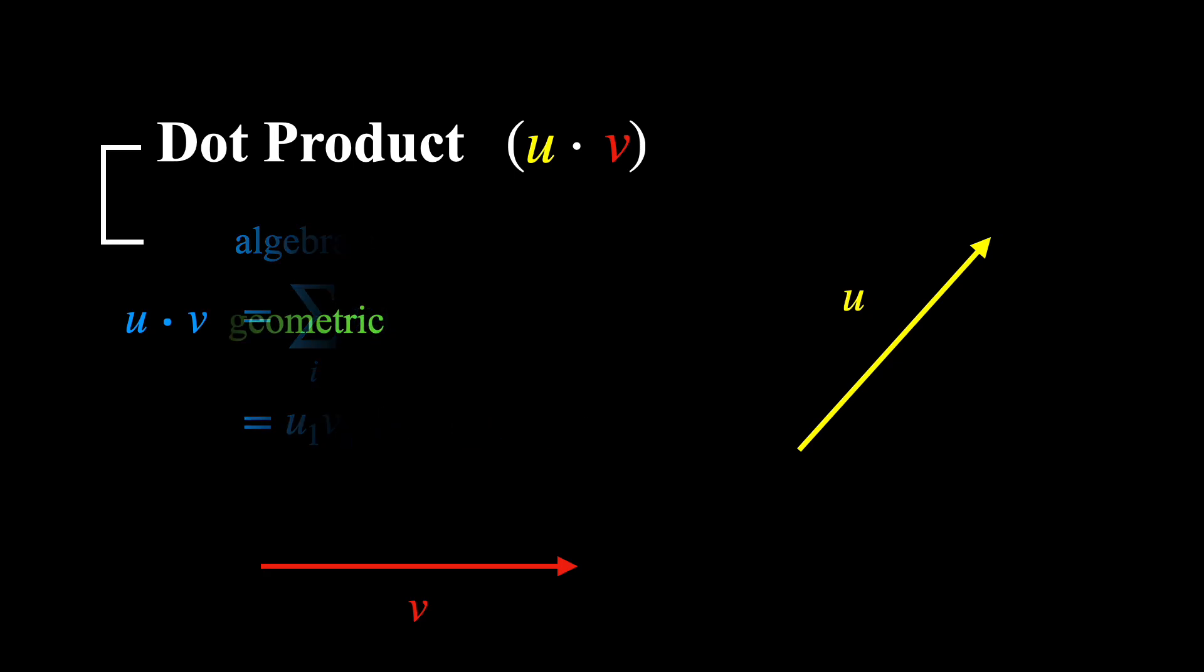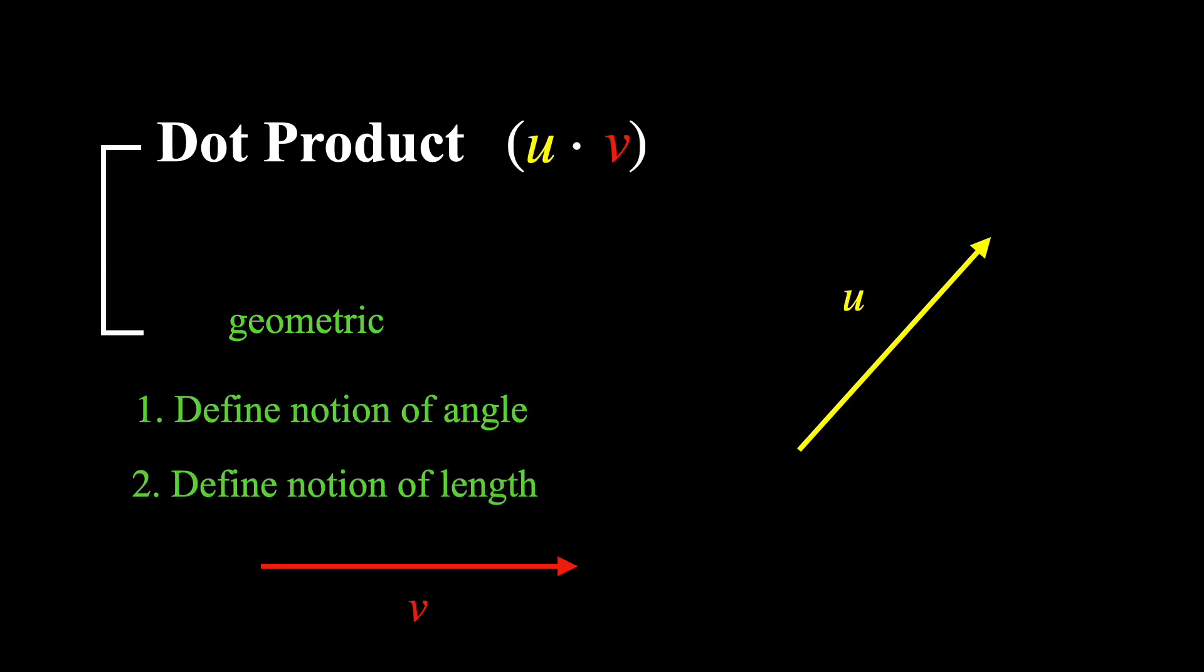Okay, so that's simple enough. Now for the other definition. The geometric definition is equivalent, but it does come with two distinct advantages. Namely, that it allows for a natural way to define a notion of angles between two vectors,